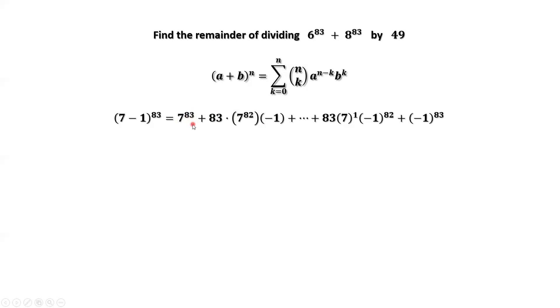You can see here the powers of 7 is decreasing from 83 to 82, 81 until 1 and 0. The powers of negative 1 is increasing from 0 to 1, 2, 3 until 83.